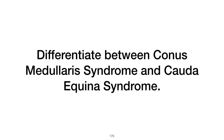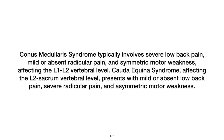Differentiate between conus medullaris syndrome and cauda equina syndrome. Conus medullaris syndrome occurs at vertebral level L1-L2, involving upper motor neuron (UMN) tracts of the lumbosacral cord. Presentation includes severe low back pain, mild or absent radicular pain, and bowel/bladder dysfunction. Physical examination reveals symmetric motor weakness, hyperreflexia, UMN signs, and symmetric perianal numbness.